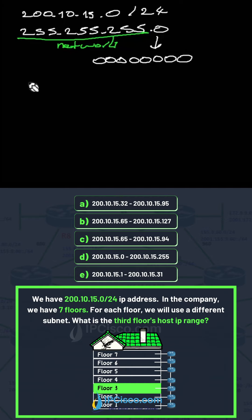So we have seven floors, and to cover all these seven floors we need 2 to the power of x must be bigger than seven, so we find three. Here we add three to our subnet mask CIDR value.